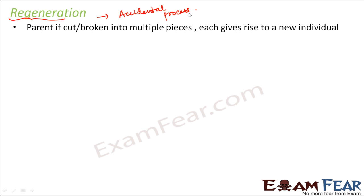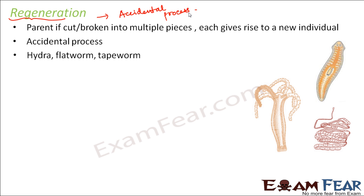This type of regeneration happens only because of specialized cells present in the body of that organism, which have the capacity to develop into different body parts. Hydra, flatworm, and tapeworm are all capable of regeneration because their body contains some specialized cells which can develop into other body parts as well. That process is called development.